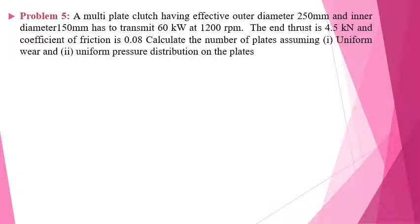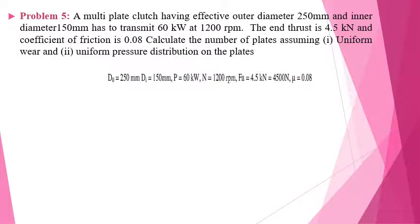Coming to the problem on multi-plate clutches: a multi-plate clutch having an effective outer diameter of 250 mm and inner diameter of 150 mm has to transmit 60 kW at 1200 rpm. The axial force is 4.5 kN and the coefficient of friction is 0.08. Calculate the number of plates assuming first uniform wear and second uniform pressure distribution on the plates.